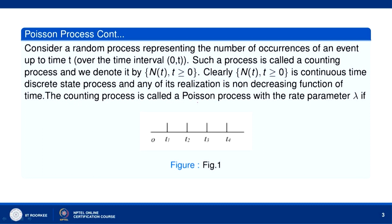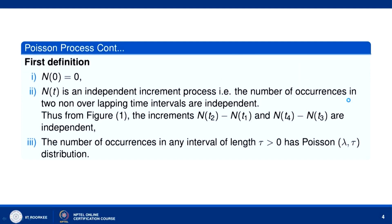The counting process is called a Poisson process with the rate parameter lambda if it satisfies the following conditions. N(0) = 0, and N(t) is an independent increment process — that is, the number of occurrences in two non-overlapping time intervals are independent.